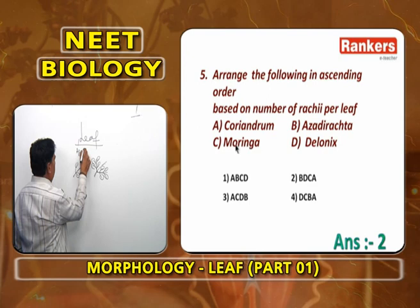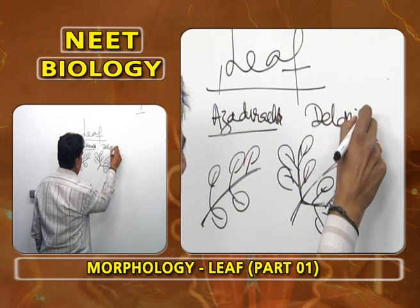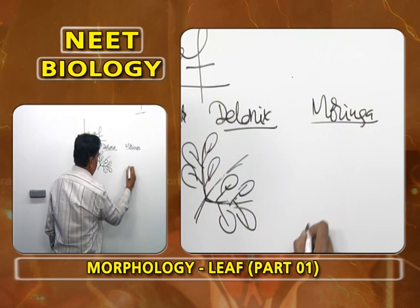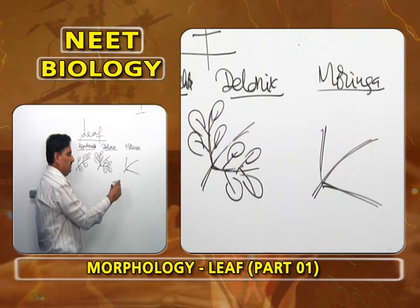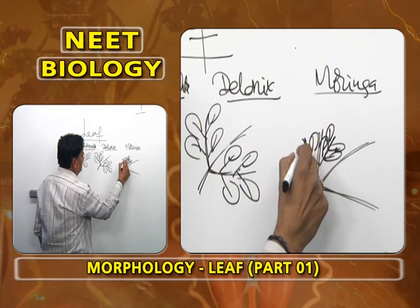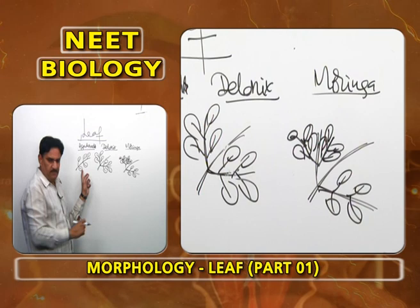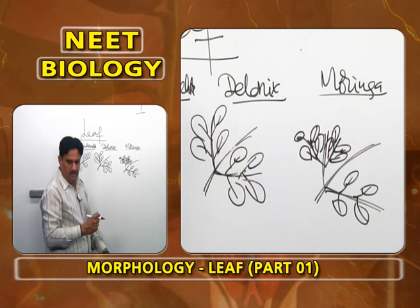Moringa (drumstick) has a primary rachis producing secondary rachis, and secondary rachis producing tertiary rachis, with leaflets arranged on both sides of the tertiary rachis — giving primary, secondary, and tertiary rachises. Coriandrum has very much divided rachises with numerous branches, and highly dissected leaflets at the tips.